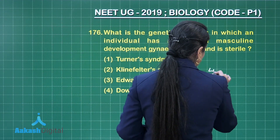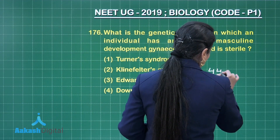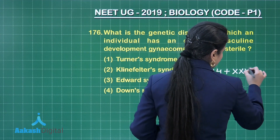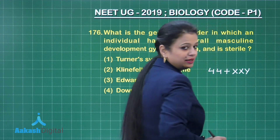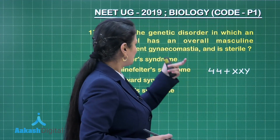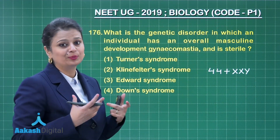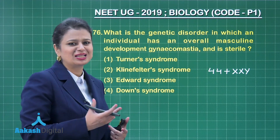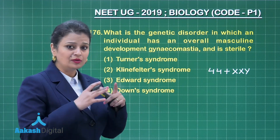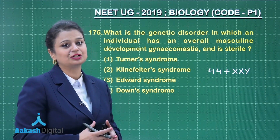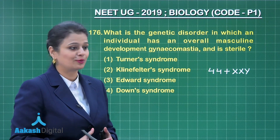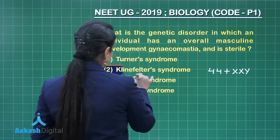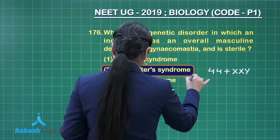In Klinefelter syndrome, there are 44 autosomes plus 3 sex chromosomes, that is XXY. Gynecomastia refers to swollen breast tissue — formation of breast tissue occurring in males. This condition is known as gynecomastia. So, the right answer to this question is option number 2.